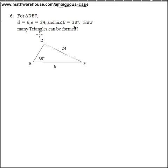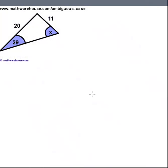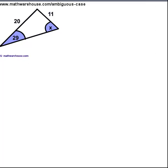The goal of this tutorial is to answer questions like the one on the screen here, question six, which comes from that free worksheet. You have a triangle DEF and you know that the length of D is 6, E is 24, and the measure of angle E is 38, and we want to know how many triangles can be formed.